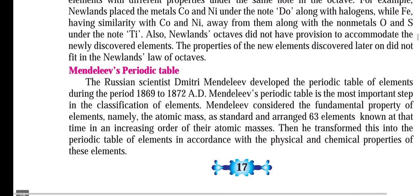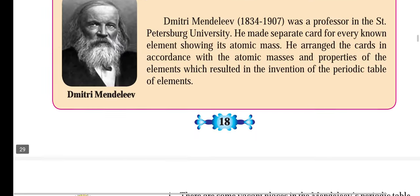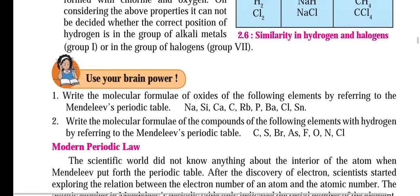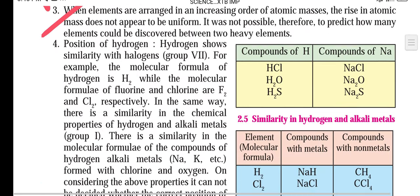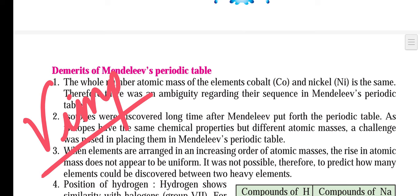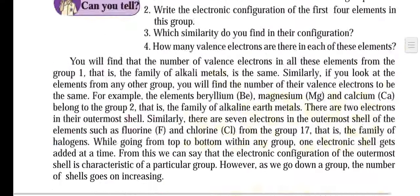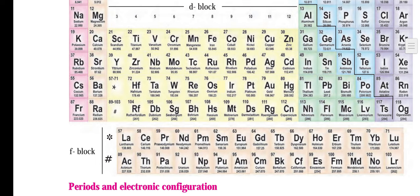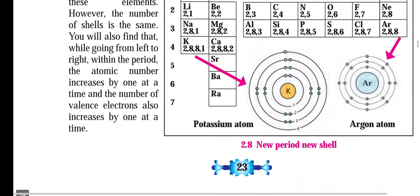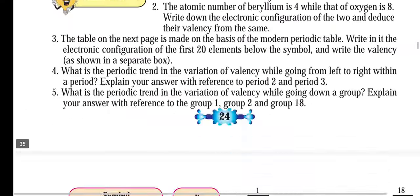In the second chapter, Newland's Law of Octaves will help you gain good marks. On page number 20, the demerits of Mendeleev's periodic table are important. You will have studied them many times. The demerits points are also important and in board exam it must be a 3-mark question. You should revise this one more time, my champions.